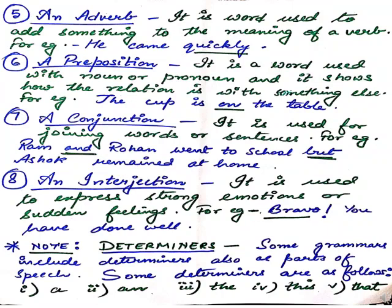Coming to the 7th point — conjunction. I hope everyone must be knowing conjunction. Conjunction is used for joining words or sentences. For example, 'Ram and Rohan went to school but Ashok remained at home.' I am connecting two people — Ram and Rohan together with 'and,' and again connecting the third person with 'but.' Words like and, but, while — these are all conjunctions used to join sentences.